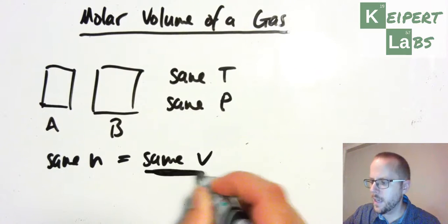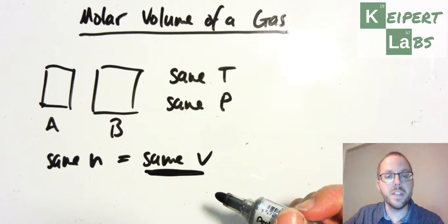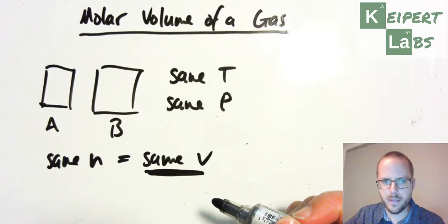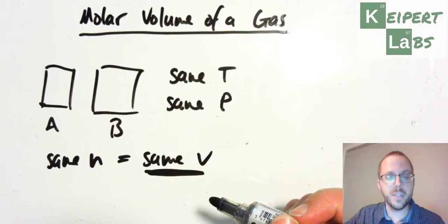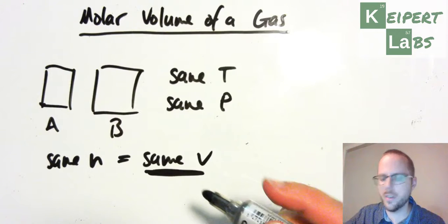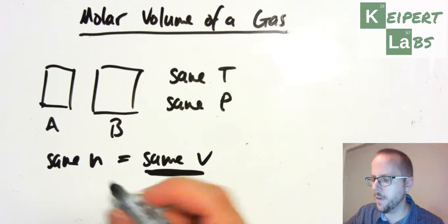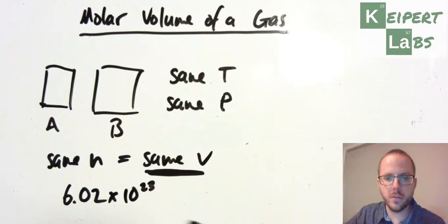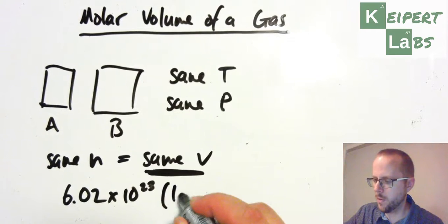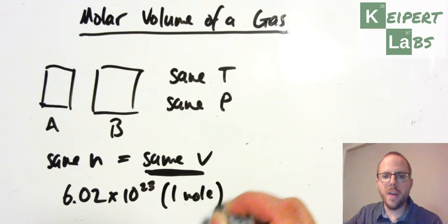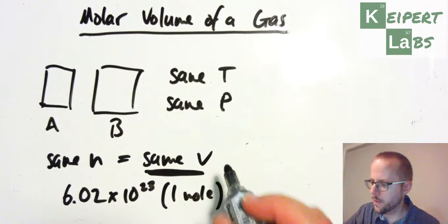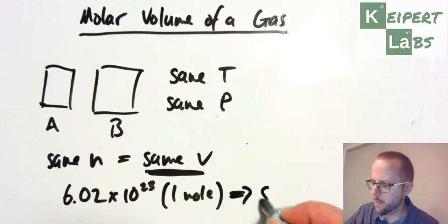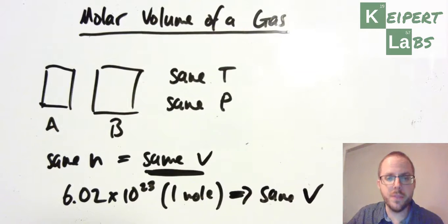Now what that means is that if I can get a specific number of particles of any gas, any two gases, they will take up the same volume, as long as the temperature and pressure are constant. So that means that if I can get, say, 6.02 times 10 to the 23 particles, which of course represents one mole of particles, of any two gases, that they will still have the same volume. They will have specific volume that relates to that number of particles, but that they will be the same.